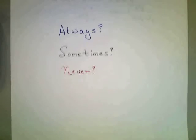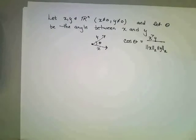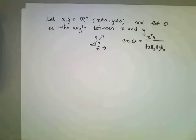Always, sometimes, never. If we have two vectors x and y that are not zero, and theta is the angle between these vectors, is it always, sometimes, or never true that the cosine of theta is equal to the dot product of x with y divided by the length of x times the length of y?